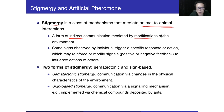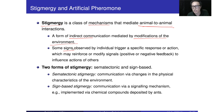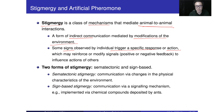The communication happens through the modification of the environment. This kind of modification serves as a sign, so when the agent finds a change in the environment, that change will trigger a specific response or action. They are going to respond correspondingly to complete the task. This kind of action could then reinforce or modify the signal.